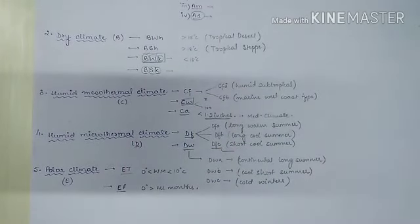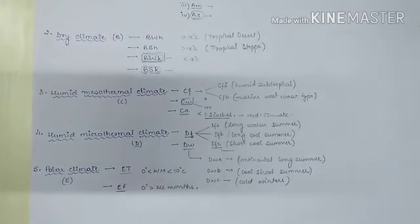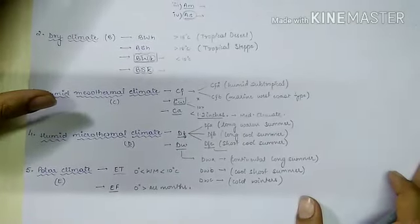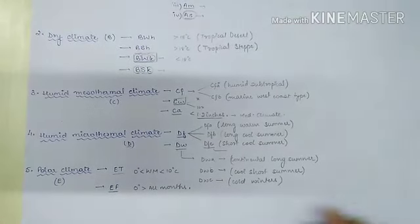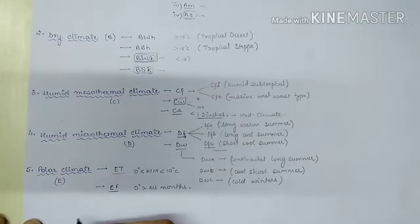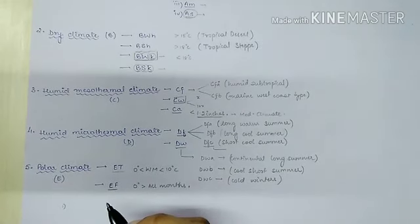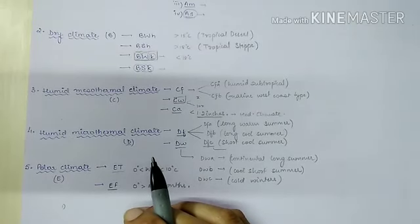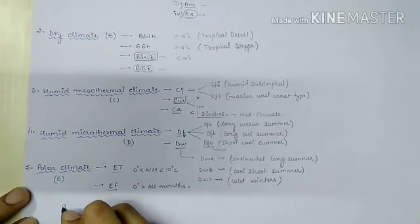Köppen's classification was easy to use as it used simple parameters and a simple three-scheme classification. However, it faced drawbacks: some geographers said it was not based on scientific calculation or proof, and that Köppen gave undue significance to mean monthly temperature and precipitation while neglecting other weather elements such as precipitation intensity, cloudiness, number of rainy days, and daily temperature.